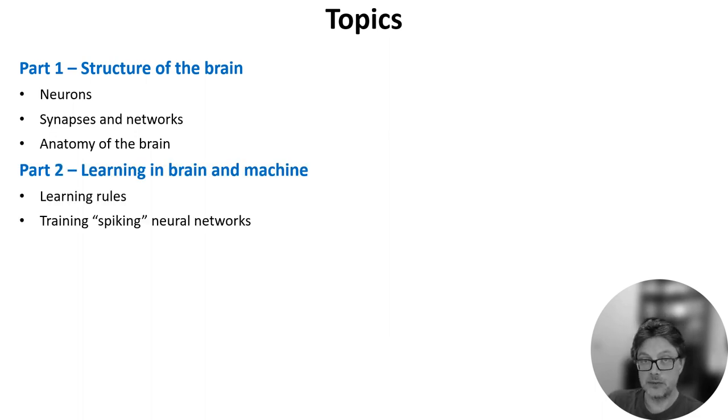In part two, we'll focus specifically on learning, what we know about how learning happens in the brain, some models of this, and how those models might relate to learning in machines.